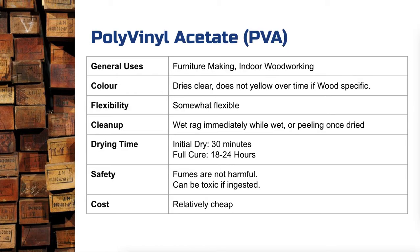Our first adhesive is polyvinyl acetate — PVA. This is the most basic of the glues we use in the workshop and is commonly referred to as wood glue. There are PVA glues used for craft, but when it's specifically designed for wood, we have the benefit of the glue drying clear — it's not going to dry a yellow colour like some craft PVA glues might.